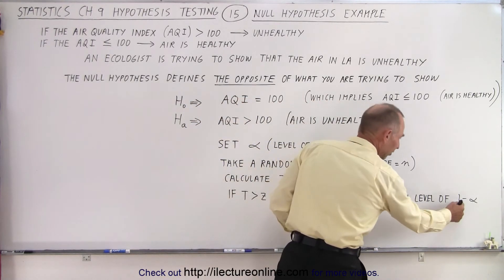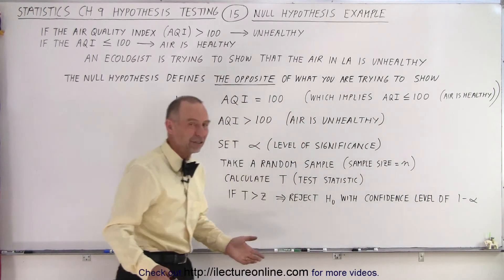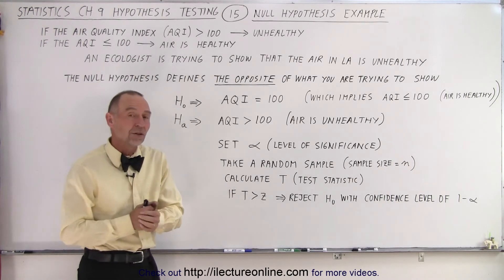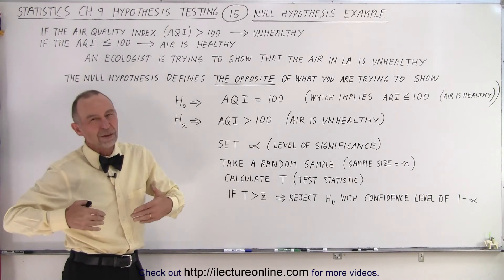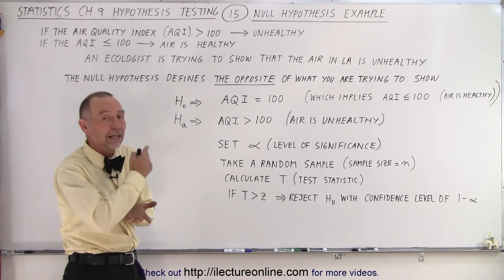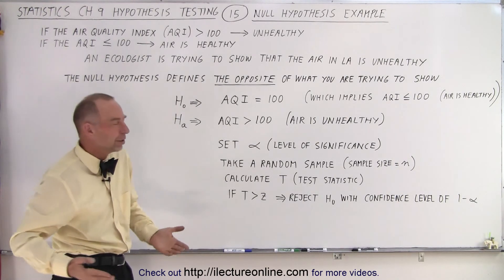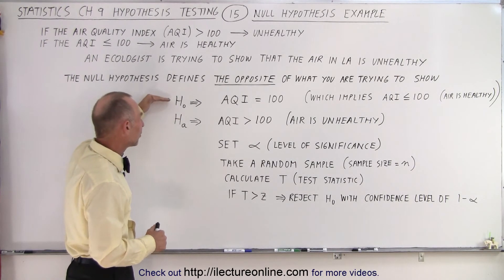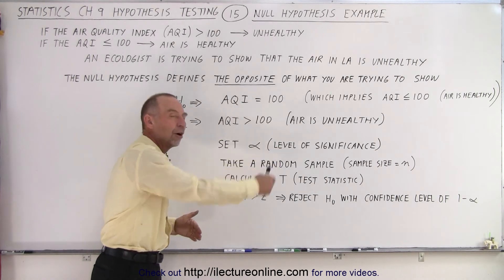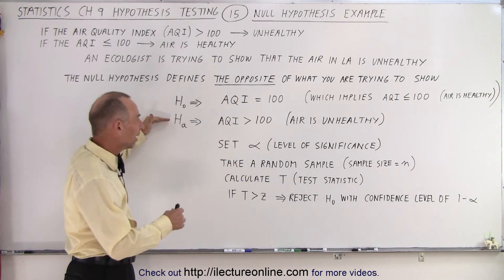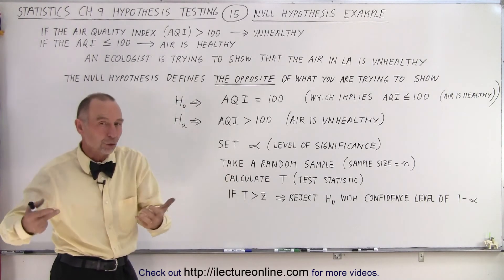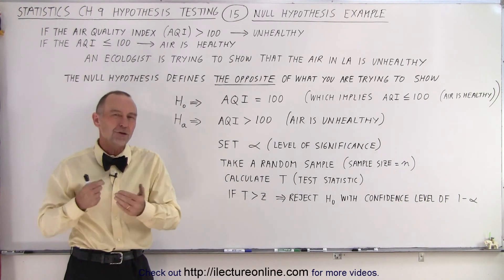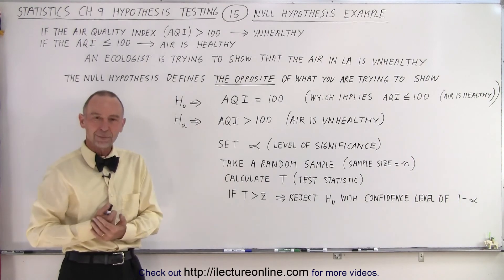We reject the null hypothesis with a certain confidence level. The confidence level is 100% minus the level of significance — typically 5%, giving a 95% confidence level. That means we have 95% confidence that the air is unhealthy. Of course this is all hypothetical — we just threw some numbers out there, but that is how we do it. Remember: the null hypothesis defines the opposite of what you're trying to show, and the alternate hypothesis is what you're trying to show, which becomes true if we can reject the null hypothesis. And that's how we think about the concept of the null hypothesis.